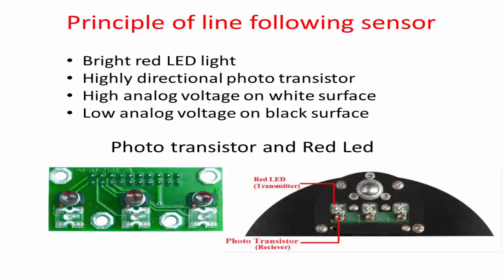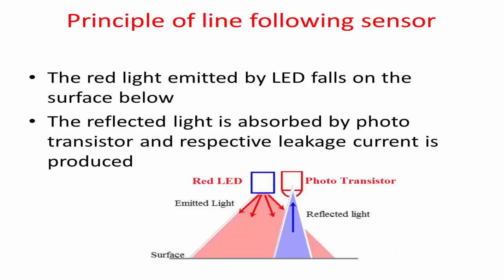Principle of line following sensor: the line following sensor consists of a bright red light and a highly directional photo transistor. The bright red light falls on the surface the robot has to follow. The surface has both black and white colored parts. The red light received by the photo transistor after reflection from a white surface is more compared to a black surface, as the leakage current from emitter to collector rises with the amount of light that falls on the base of the transistor.